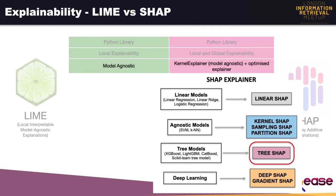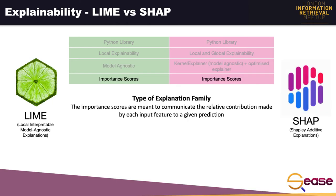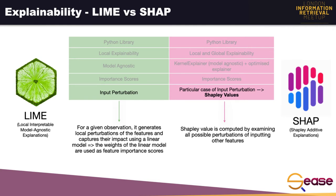LIME is a model-agnostic implementation, so it can be applied to any type of model. The model-agnostic implementation of SHAP is the kernel explainer, but SHAP also has several optimized explainers for specific model types, such as TreeSHAP, which is specific for tree models — and we will see it later during the case study. They both use importance scores, which is the most common type of explanation family. It determines the form of explanation information, and the higher the score, the more impactful the feature.